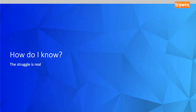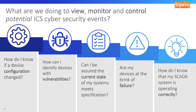Let's get started. Ask yourself: what are you doing to view, monitor, and control potential ICS cybersecurity events? I'm a sucker for good hypothetical and rhetorical questions, so I've posed a handful here and on the next slide. These are the questions I often found myself asking our security team, both when I worked at that utility and when I'm in front of customers today. More often than not, it's easy to find gaping coverage holes, gaps, and uncertainty. We ask things like: how do I know if a device configuration has changed? How can I identify devices with vulnerabilities? Can I be assured the current state of my systems meets specification? Are my devices at the brink of failure? And how do I know that my SCADA system is operating correctly?